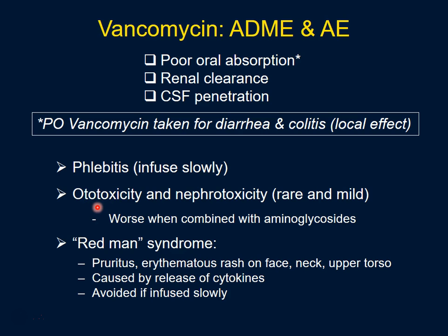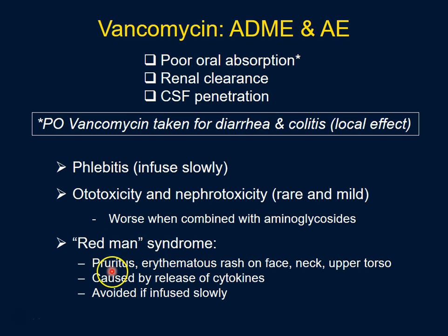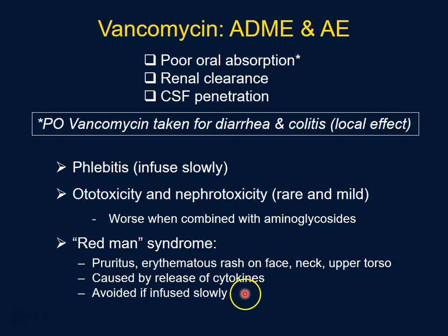Ototoxicity and nephrotoxicity with vancomycin are rare and mild, but tend to worsen when combined with aminoglycosides, which are also ototoxic and nephrotoxic. A more common effect is red man syndrome, sometimes called red neck syndrome, which involves itching and rash on the face, neck, and upper torso, caused by a sudden release of cytokines when vancomycin is infused rapidly. Slow infusion normally avoids this, and if it does occur, it is usually managed with NSAIDs such as aspirin.